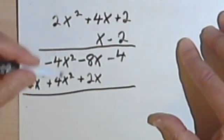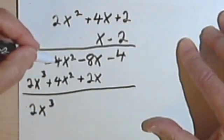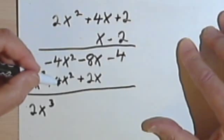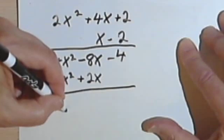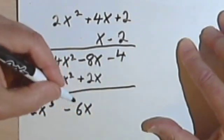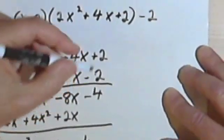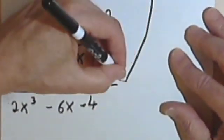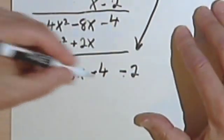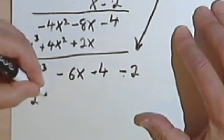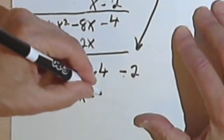And now I'll just add these two polynomials together. So I get 2x to the third. This negative 4x squared and positive 4x squared will cancel. I have a negative 8x plus 2x is negative 6x minus 4. And then I want to remember this negative 2. So I'm going to bring that down and subtract 2 from everything. So simplifying this, I get 2x to the third minus 6x minus 6.